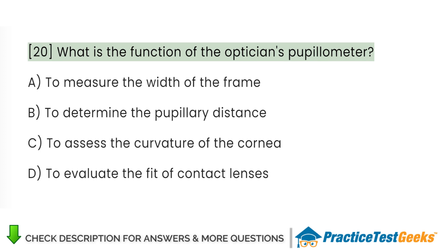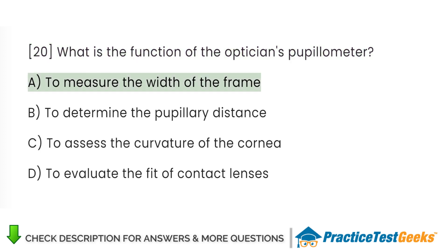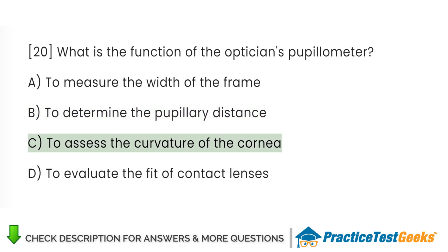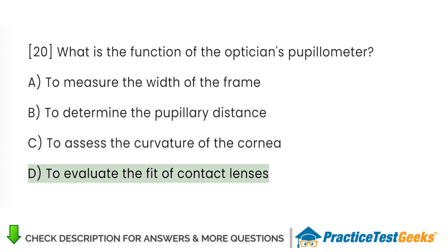What is the function of the optician's pupilometer? A. To measure the width of the frame. B. To determine the pupillary distance. C. To assess the curvature of the cornea. D. To evaluate the fit of contact lenses.